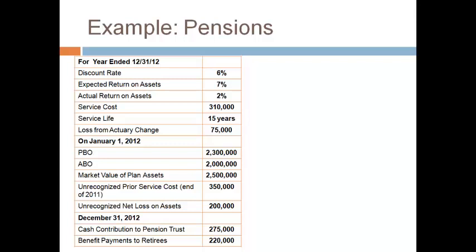We will walk through a complete example of accounting for a defined benefit pension plan. The information necessary includes the different interest rates, the current year service cost, the change from actuary factors, and the service life. You will also need beginning balances for the PBO, the fair market value of assets, and the unrecognized amounts that are included in OCI at the beginning of the year.